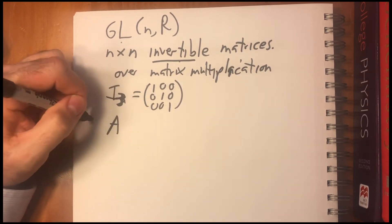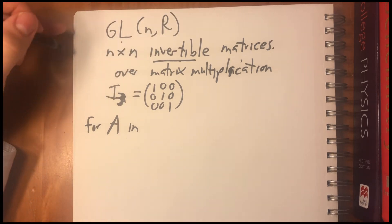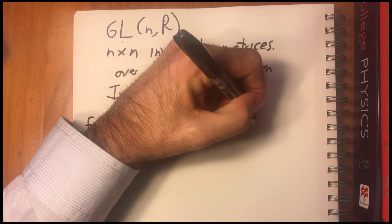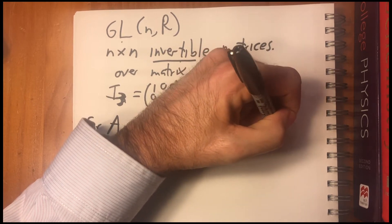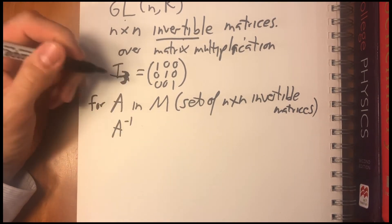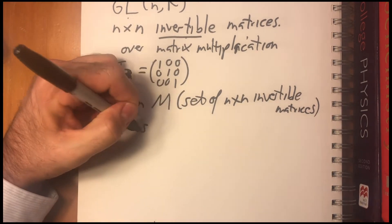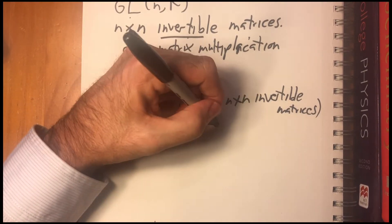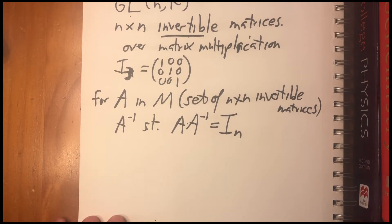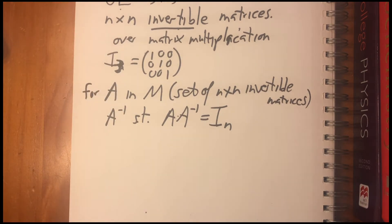So, if we have a, that means that say, for a in, let's just call this, let's call this set m. For a and m, we know that there exists an a inverted, which the minus one means that it's the reciprocal, right? Or the inverse, such that a times a to the minus one equals i to the n. Okay. So, we know there's inverses. We know it's associative. We know there's an identity. The one thing we have to prove is that there's closure.